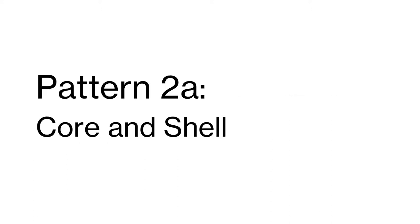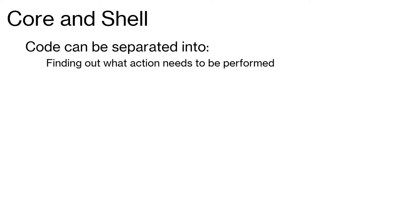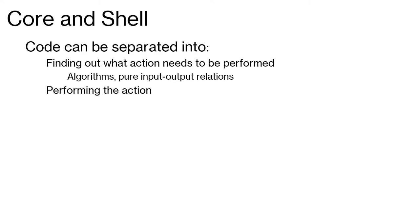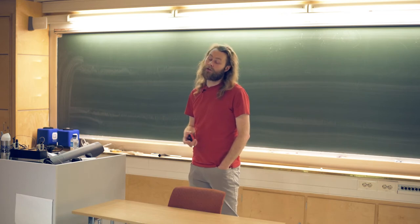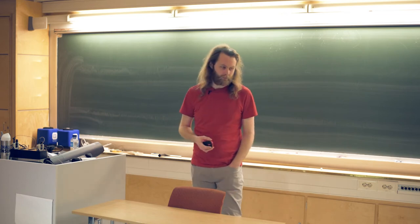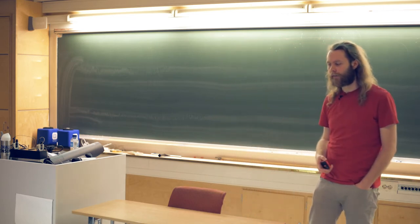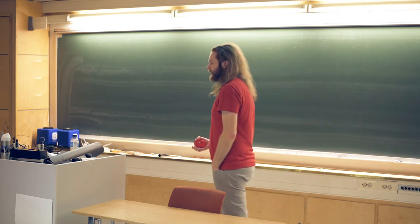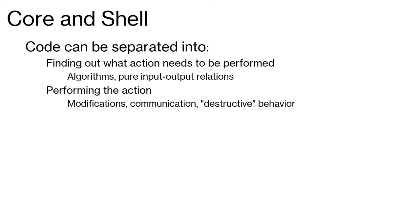Code can always be separated into two parts: finding out what action needs to be performed, and then actually performing the action. Finding out what to do can always be expressed as some kind of algorithm or pure function — it just returns the new state or the output that needs to be set, it doesn't actually do anything. And then performing the action would be some kind of modification: writing over a variable, setting an output, and all other kinds of destructive behavior. We can always perform this separation.